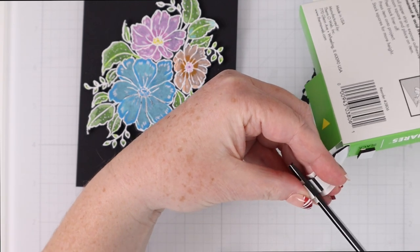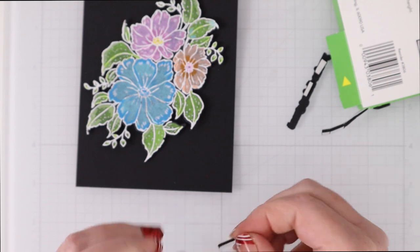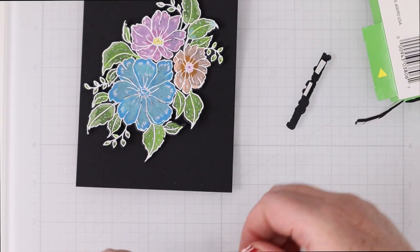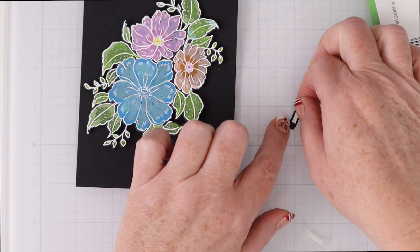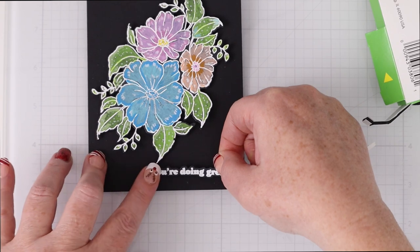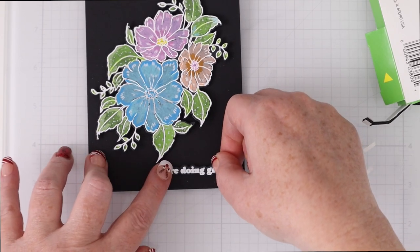I'm going to cut some slivers of these foam squares because I'm going to pop up the sentiment. I didn't want it to get too lost in the background there and since it is black on black with just the white stamped sentiment I thought popping it up might help with that.